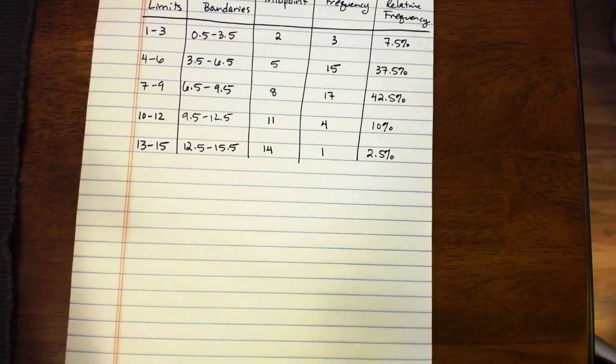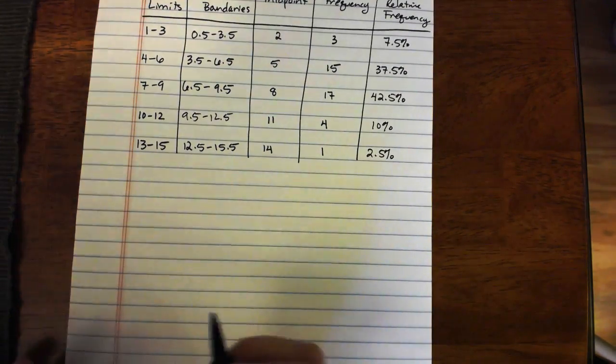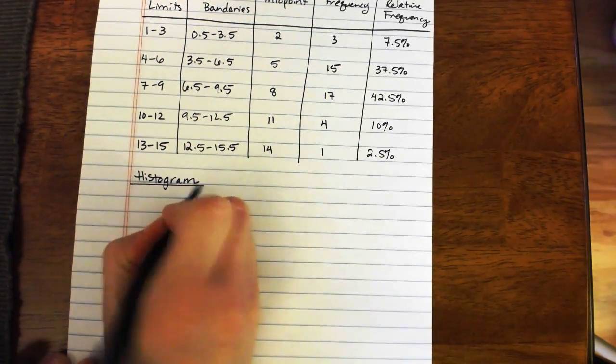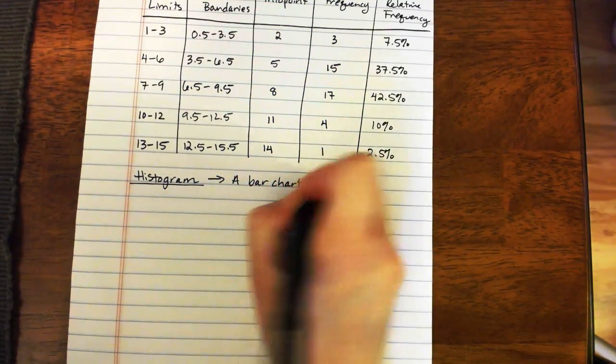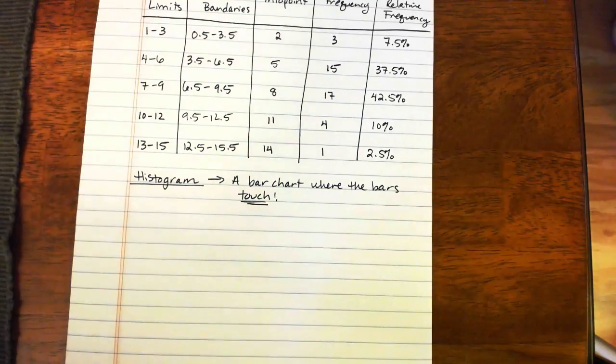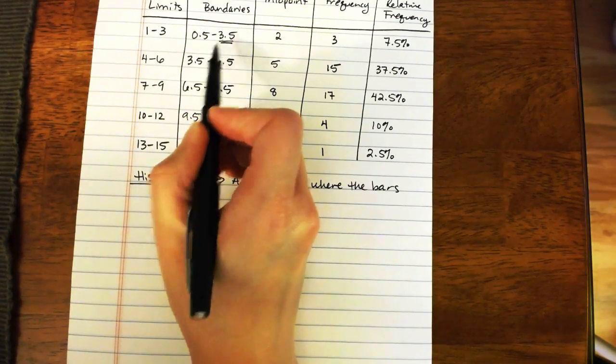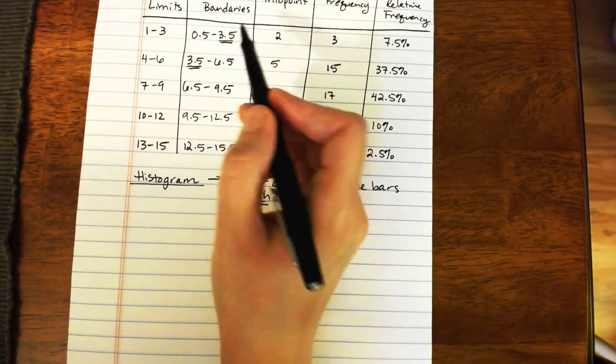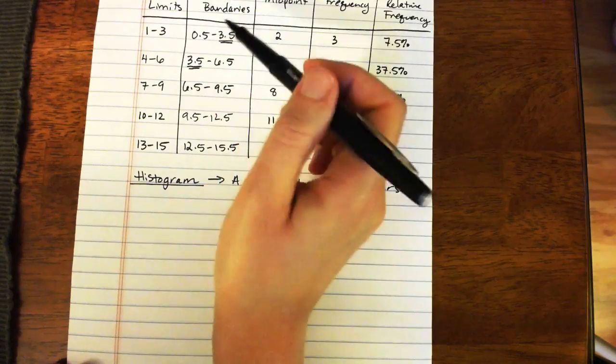A histogram takes a frequency table and converts it into a graphical display. The way that we can do that, we can create two different kinds of histograms. We can create what's just a basic histogram, or we can create a relative frequency histogram. But basically, a histogram is simply a bar chart where the bars touch. The bars have to touch in a histogram. There cannot be space between the bars. That, believe it or not, is why we spent time in the last video forcing these class boundaries to meet, rather than having a one unit gap. We had to force these two to meet so that the bars would touch when we make the histogram.